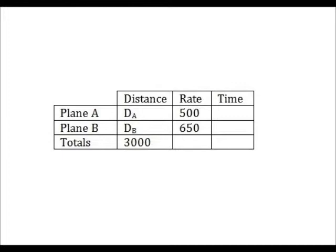As an example, if plane A has traveled, let's say, 1,000 miles and meets plane B there, then we know that plane B has traveled 2,000 miles, which is the total distance minus the distance plane A has already traveled. Does this make sense? So we know the total distance is 3,000, and we can put this in the totals row.